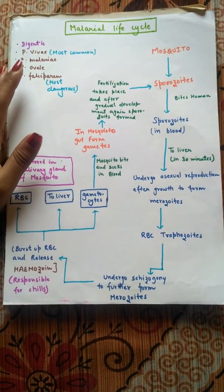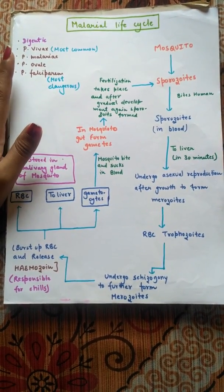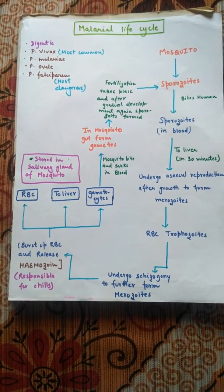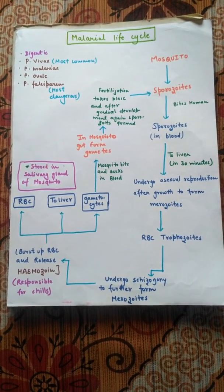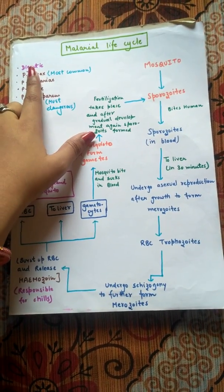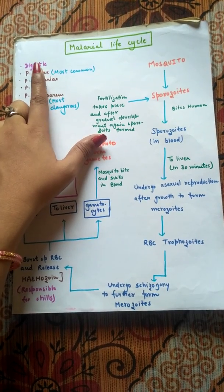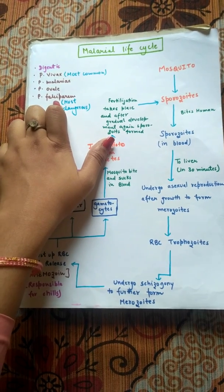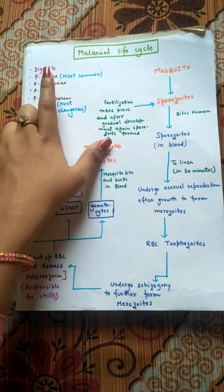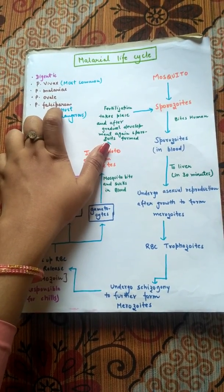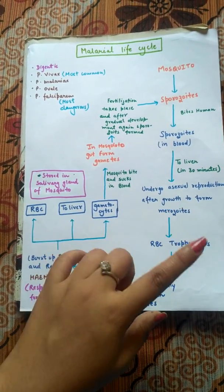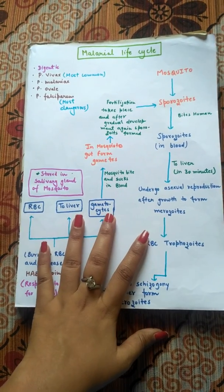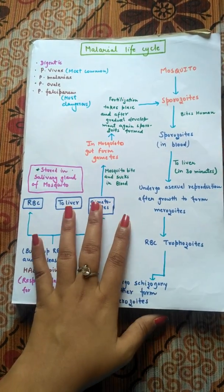This is a protozoan disease and the malarial parasite requires two hosts — one is human and the second host is mosquito. That is why it is known as a digenetic life cycle. The malarial life cycle is digenetic because it requires two hosts. Now let's look at the life cycle of Plasmodium vivax and how it goes from one host to another.